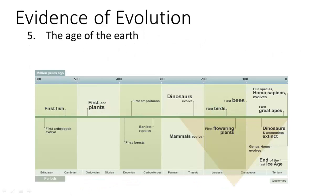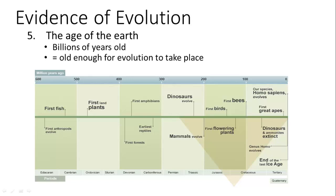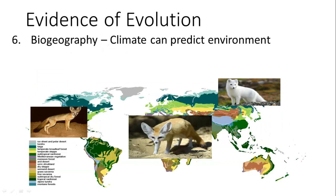Also, the age of the earth — as we learn more about geology, we can determine that the earth is actually billions of years old, not thousands of years old, and that allows for enough time for evolution to take place. Going back to analogous traits, biogeography is looking at life as shaped by the climate in which it lives. The climate can predict not only the environment, but also what natural forces are selecting for traits.